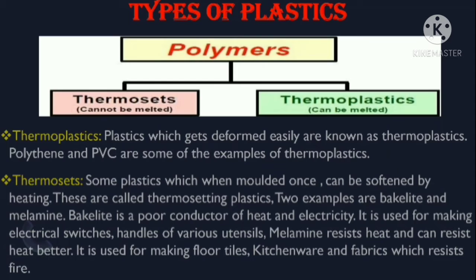Now let's see the types of plastics. Thermoplastics are plastics which get deformed easily. Polythene and PVC are some examples of thermoplastics. When a hot substance is applied to these plastics, they get deformed, which is why they are known as thermoplastics.